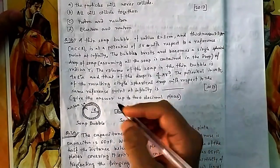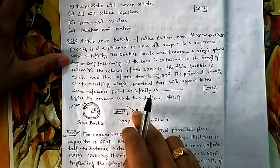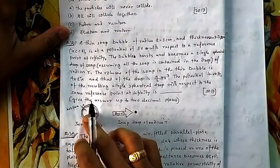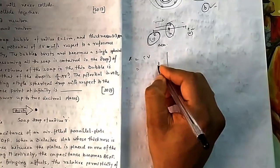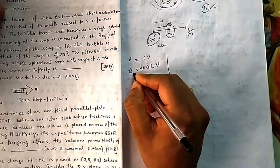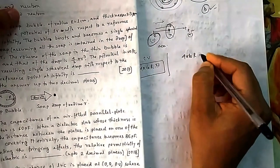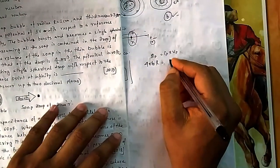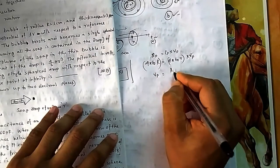The charge will not be dissipated — whatever charge was on the bubble remains on the drop. If I can find the capacitance, I can find the charge using Q = CV. For the first case, the voltage is 1 volt and the capacitance of a sphere is 4πε₀R, so Q = 4πε₀R. This charge remains the same on the drop, so Q = C_final × V_final. The capacitance of the drop is 4πε₀r (small r), so V_final = R/r (capital R over small r).